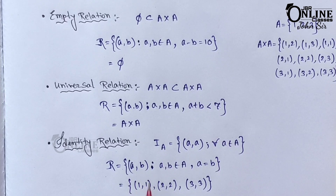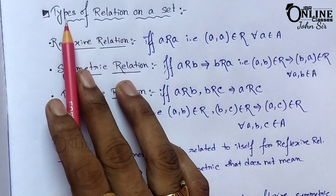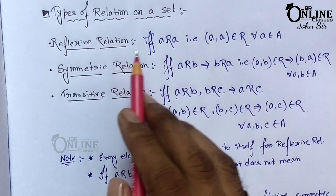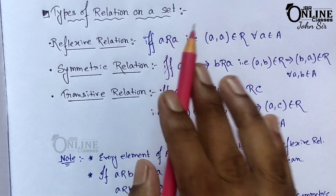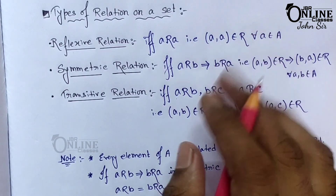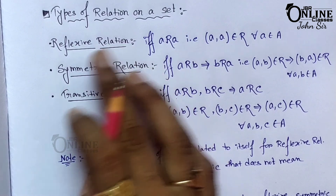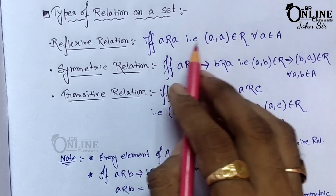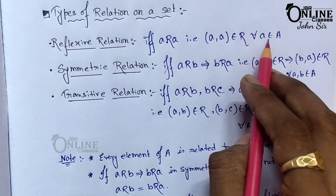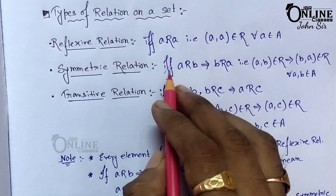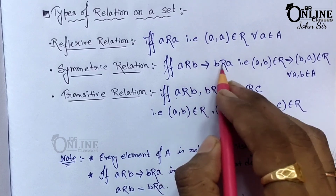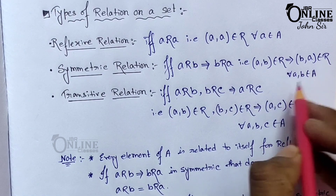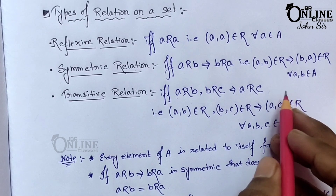Now the types of relations on a set. Let R be a relation on a non-empty set A. First, R is called a reflexive relation if a is related to a, that is (a, a) ∈ R for all a ∈ A. Second, R is called a symmetric relation if and only if a related to b implies b related to a — that is, (a, b) ∈ R implies (b, a) ∈ R, for all a, b ∈ A.